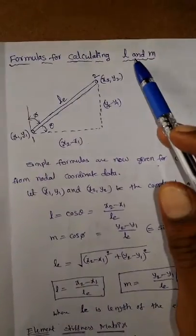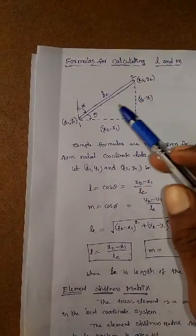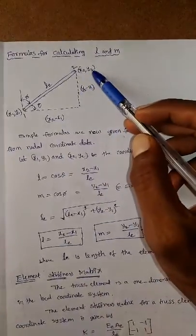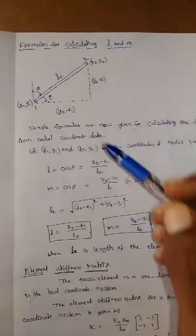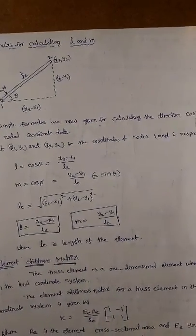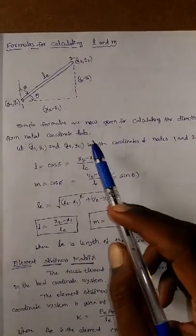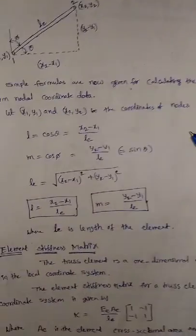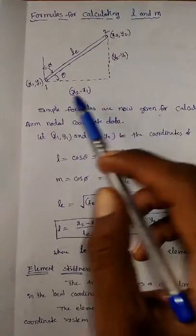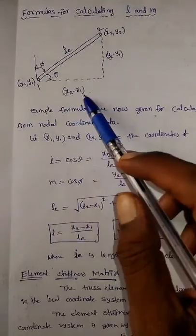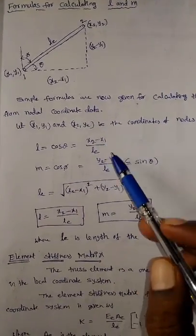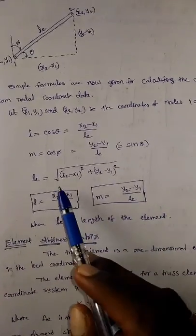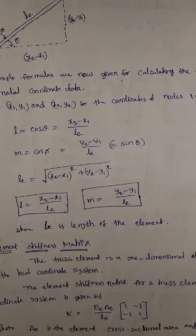Simple formulas are given for calculating the direction cosines L and M from nodal coordinate data. Let x1, y1 and x2, y2 be the coordinates of nodes 1 and 2 respectively. The element length LE = √((x2−x1)² + (y2−y1)²). L = cosθ = (x2−x1)/LE and M = sinθ = (y2−y1)/LE. Thank you.